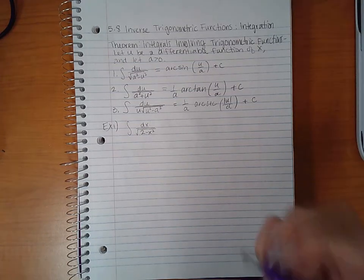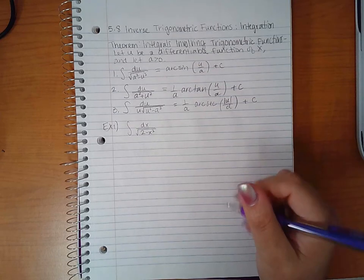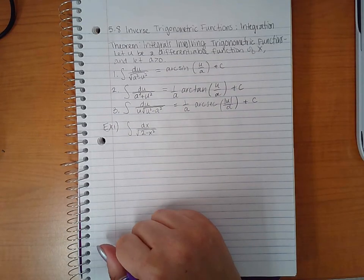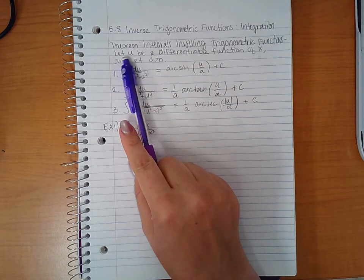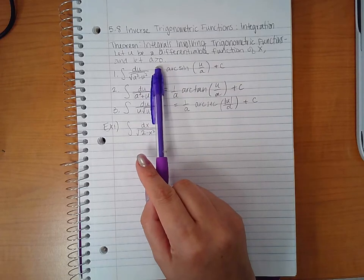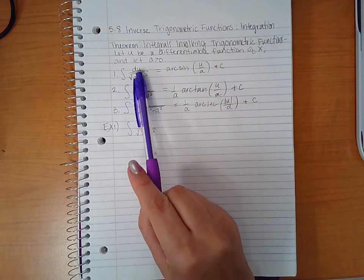This is the inverse trigonometric function section integration. The theorem says the integrals involving trigonometric functions: let u be a differentiable function of x and let a be a positive real number. For one, du over the square root of a squared minus u squared.